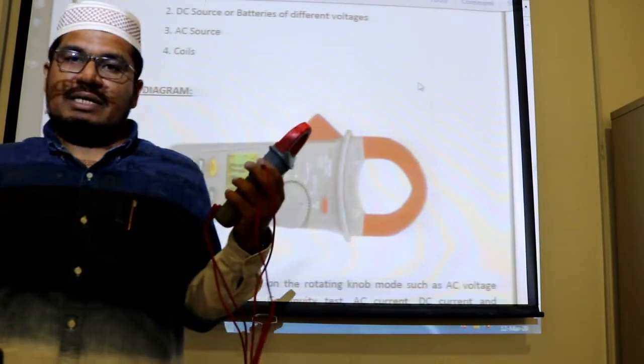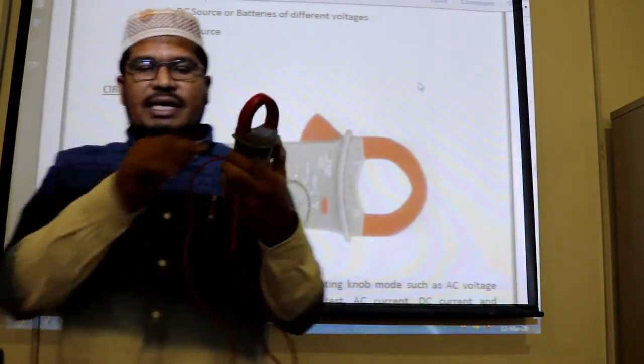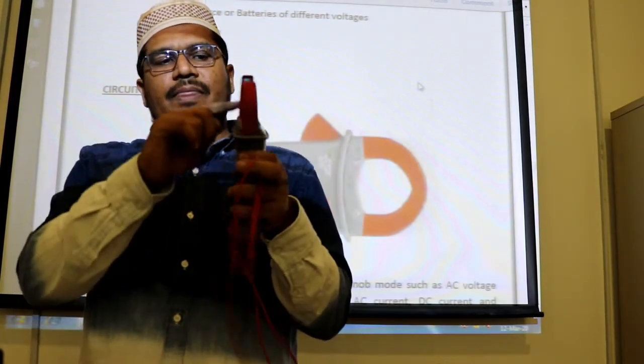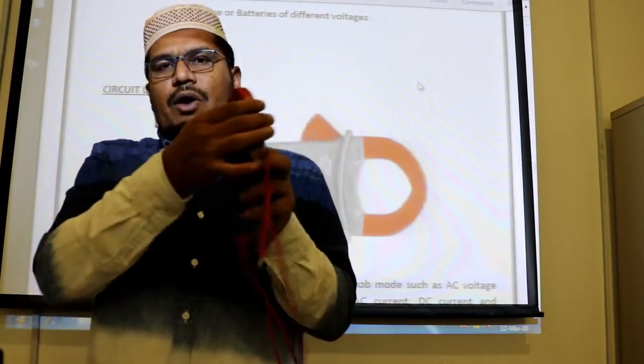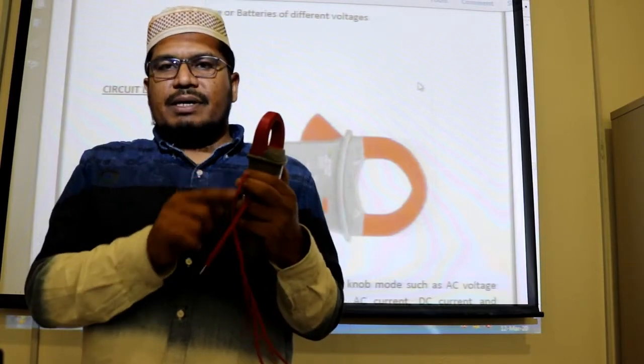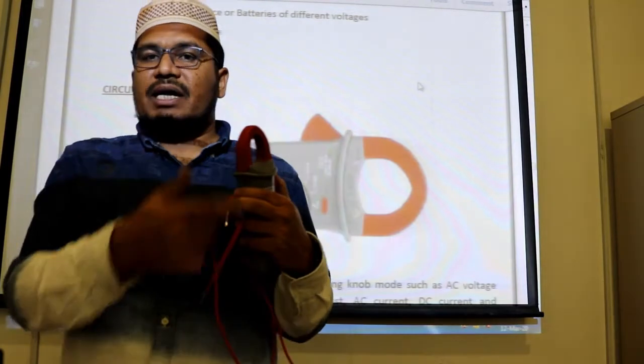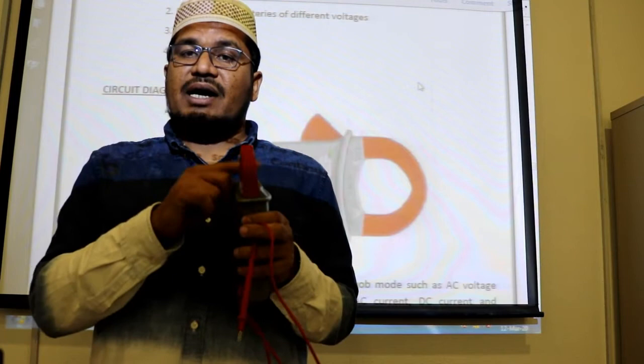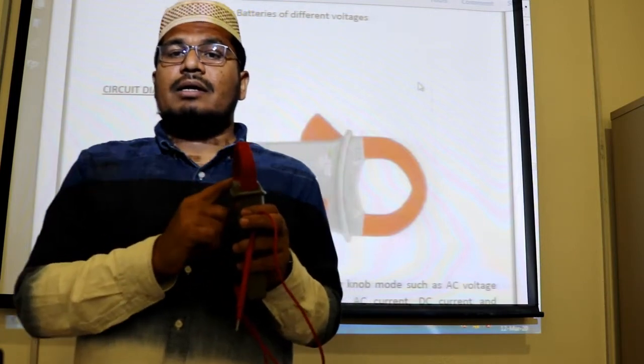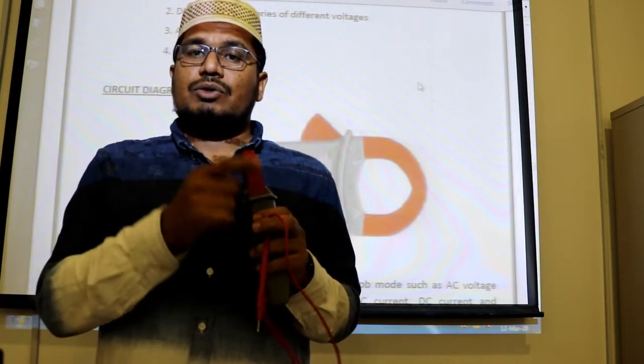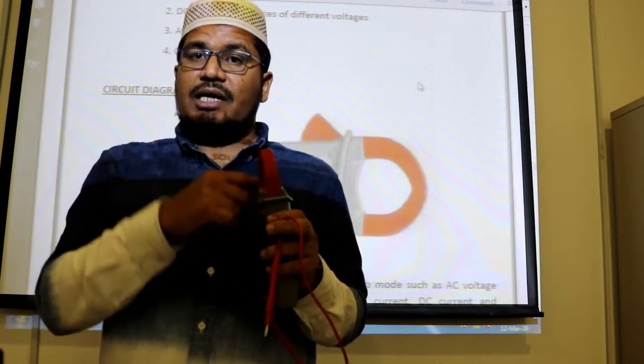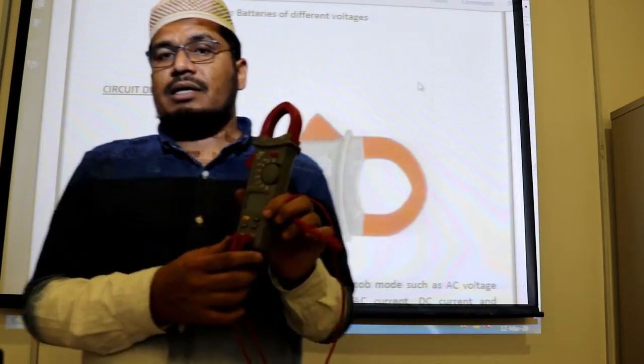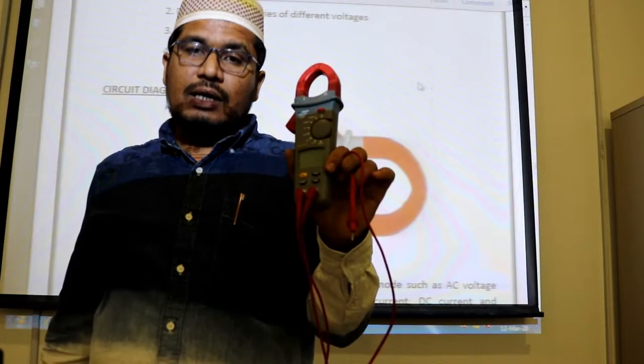It will work like a transformer action. So there is a current in a particular wire, particular conductor. So when you place a clamp on it, then that particular wire current always generates a magnetic field around that conductor. So that magnetic field will cut by this clamp and it will act as a short circuit of a transformer and it will generate its own current and it is calibrated in the device to measure that current.